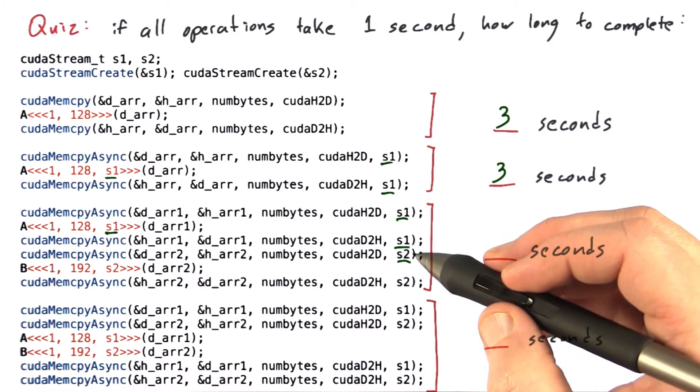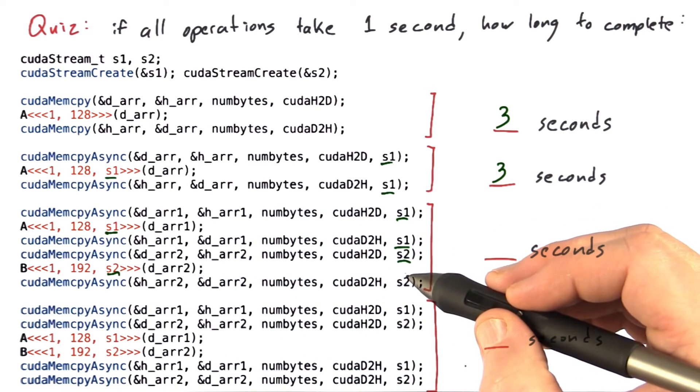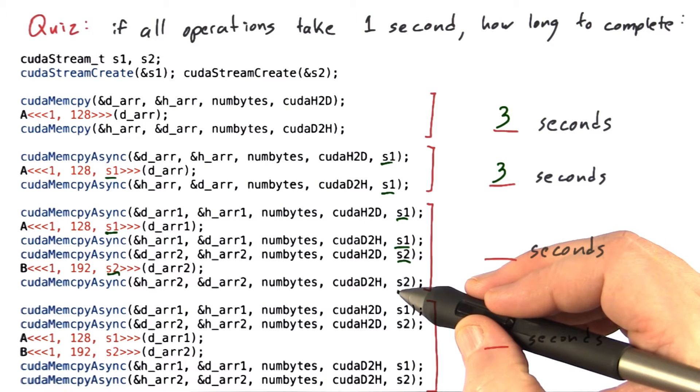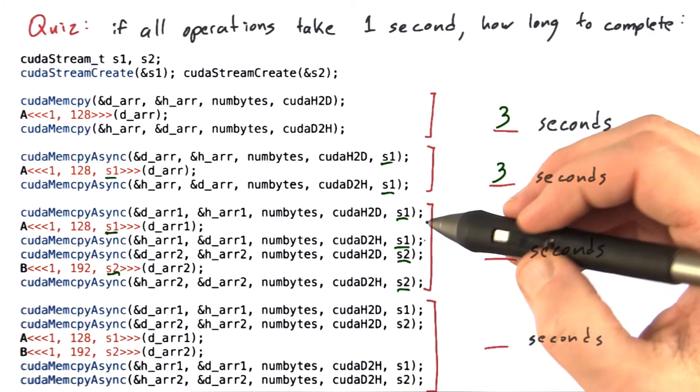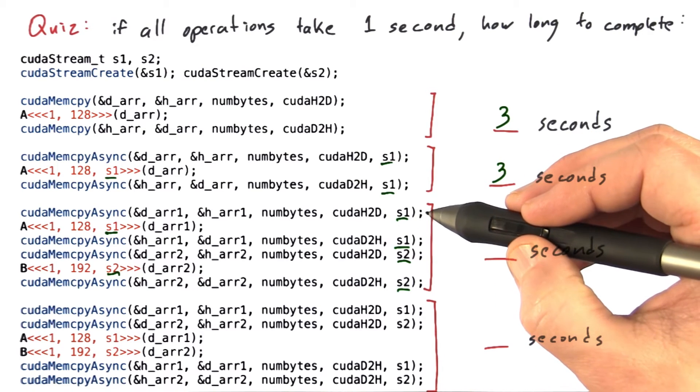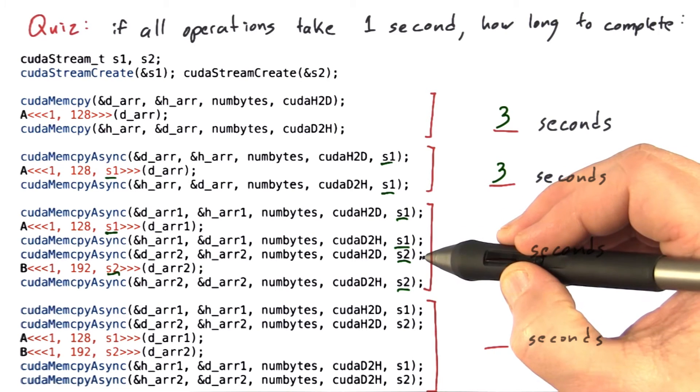It'll complete in one second. It calls kernel B in one block of 192 threads, also in S2, and then calls cudaMemcpyAsync, again in S2, to copy the results back. So the first memory copy will happen. These next two operations in S1 will get queued up, and the next memory copy will happen essentially immediately.